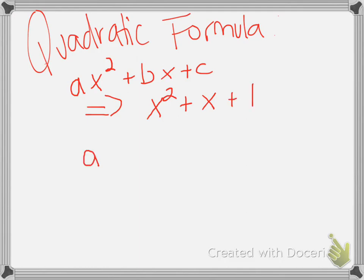So, for instance, in this case, I have a in this equation, but a equals one, because there's a one in front of that x squared. I have a b, b also equals one, because there's a one in front of that x. And I have a c, and c equals one, because there's a c at the end there.